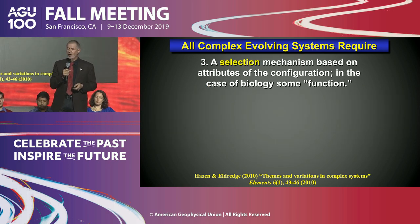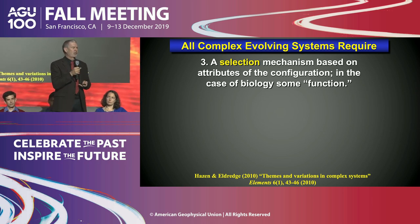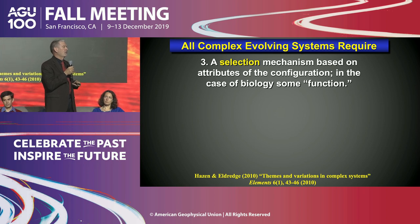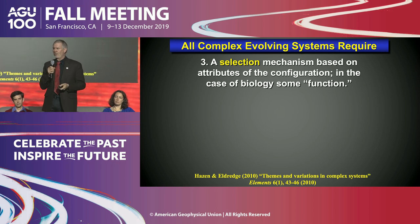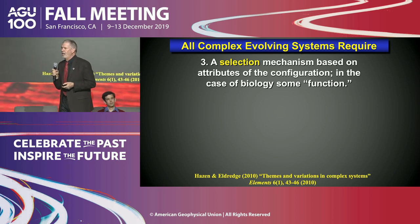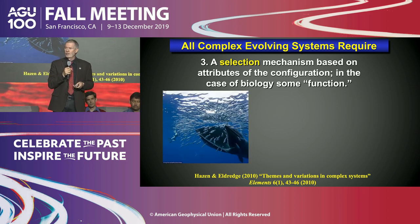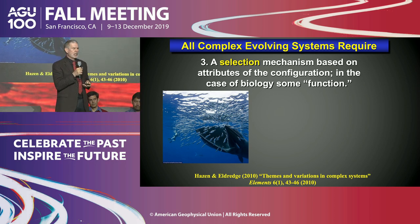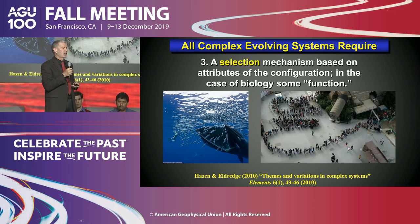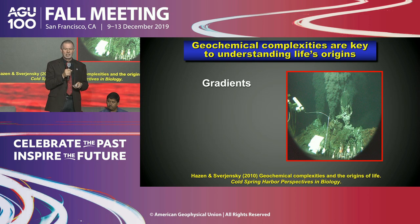The second requirement is a mechanism by which significant numbers of configurations can be sampled — and here a dynamic planet becomes very important. It's not sufficient to have a system with lots of agents; they have to constantly shuffle around in different ways. This can happen through selecting and concentrating molecules on mineral surfaces, in deep volcanic environments with lots of gradients and fluxes, and also through sexual selection. The third requirement is a selection mechanism — some configurations must be more able to function.